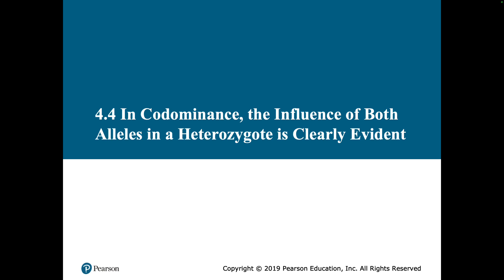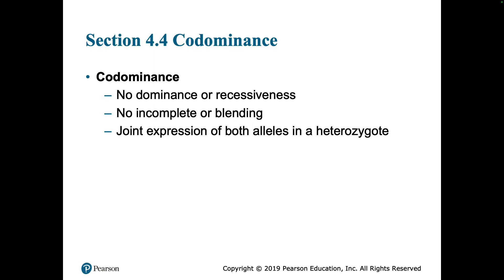Incomplete dominance and co-dominance sound similar, and in some ways they are, but in co-dominance the heterozygote is not a blend — both alleles are expressed equally. In co-dominance there's no dominance, no recessiveness, no incomplete dominance, and no blending. It's joint expression of both alleles.